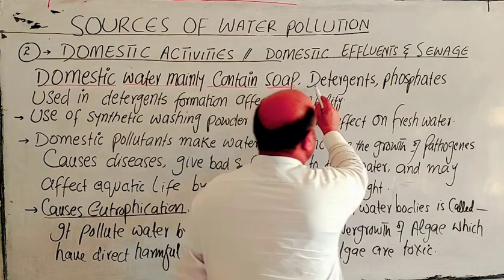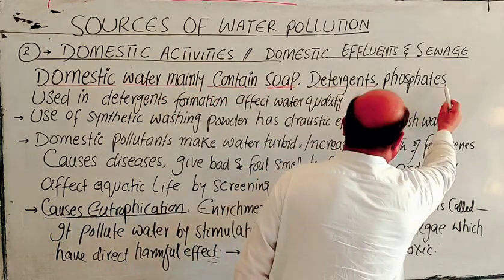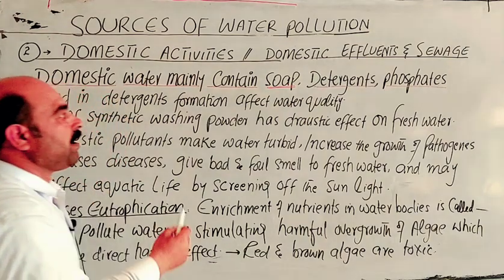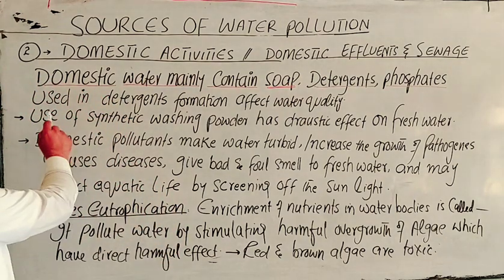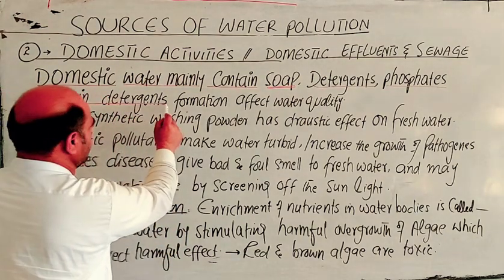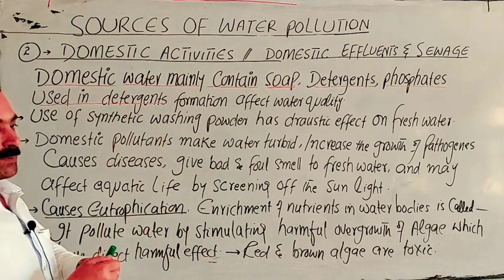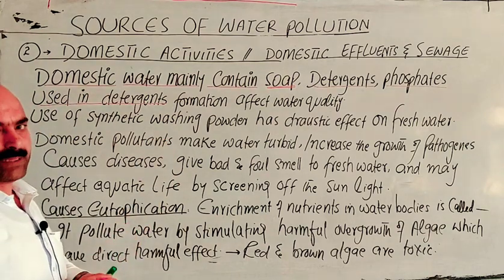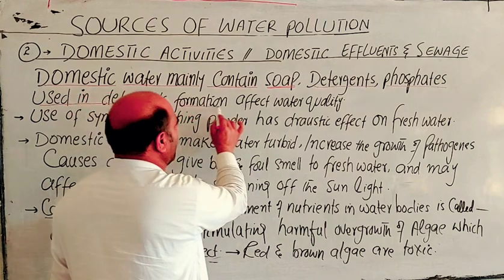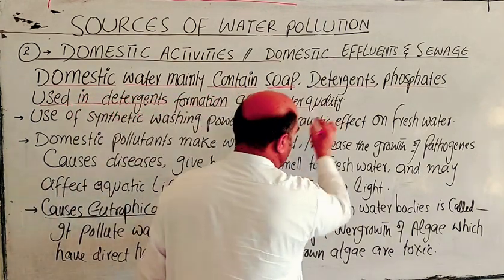Soap and detergents are surface-active agents. Phosphates are used in detergents. These phosphates used in detergents affect water quality through detergent formation.